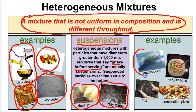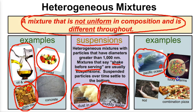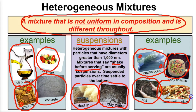More examples of heterogeneous mixtures: the Pacific Ocean — if we take a sample from here, it's not always going to be the same as a sample from elsewhere. Lucky Charms — heterogeneous mixture. Soil — completely different throughout — heterogeneous mixture. And a combination pizza is definitely going to be a heterogeneous mixture. Not every bite's the same.